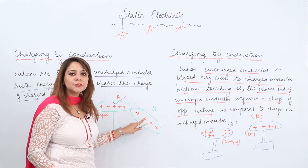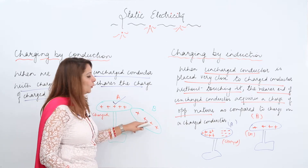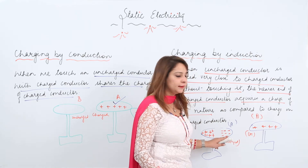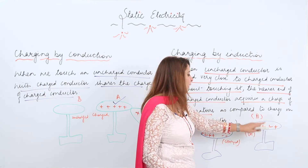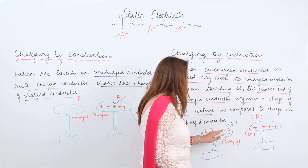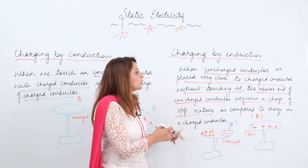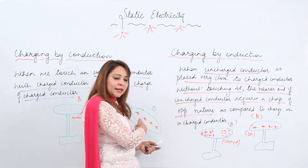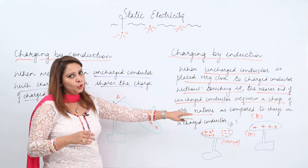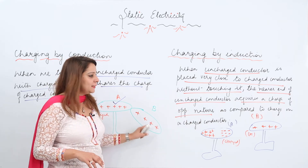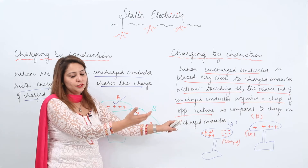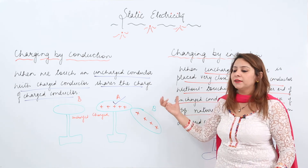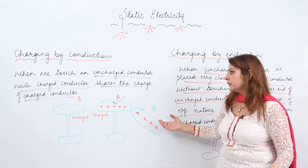Third, in conduction the uncharged body acquires the same kind of charge — if the charged body is positive, it transfers a positive charge; if negative, it acquires a negative charge. But in induction, the opposite charge is induced on the nearer end towards the charged body. So the differences are: touch vs. no touch, charge strength reduces vs. remains the same, and same charge is acquired vs. opposite charge on the nearer end. These are the two methods of charging and the key differences between them.